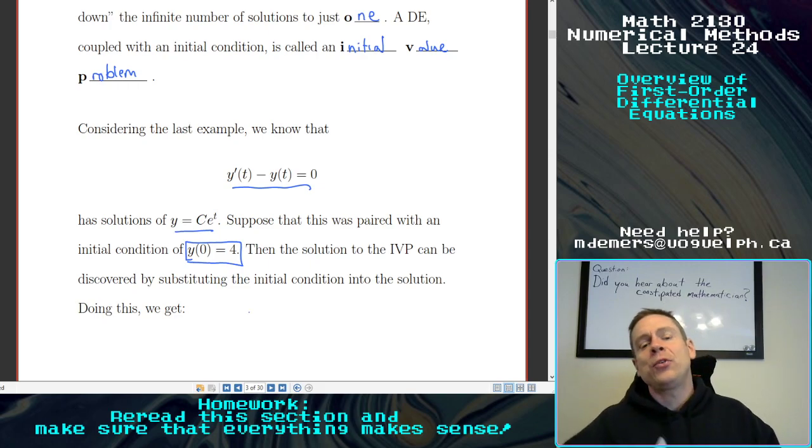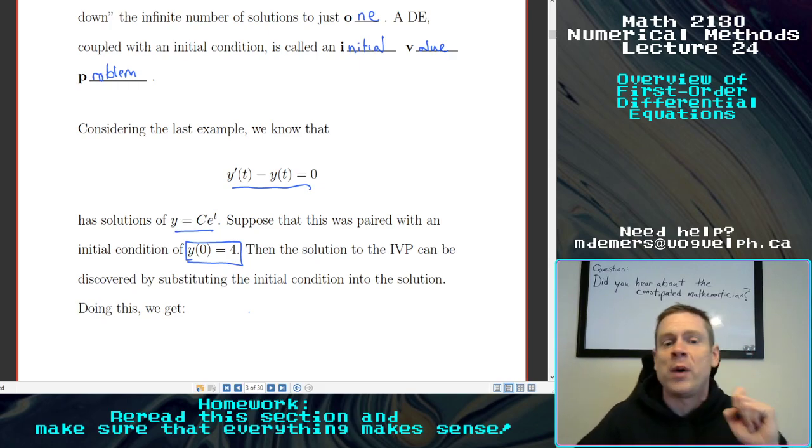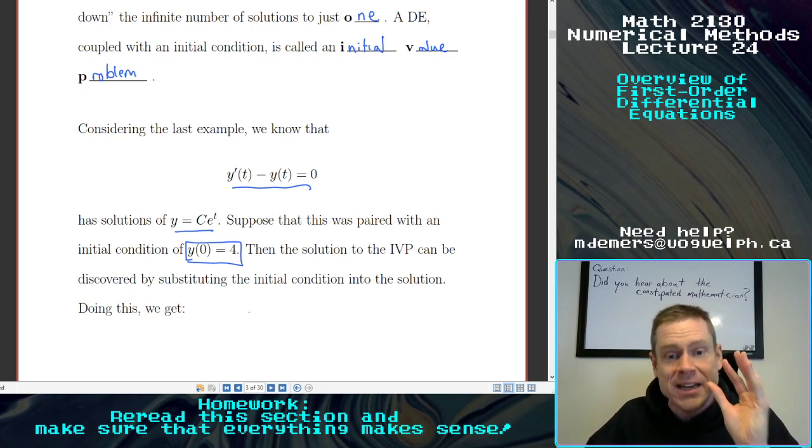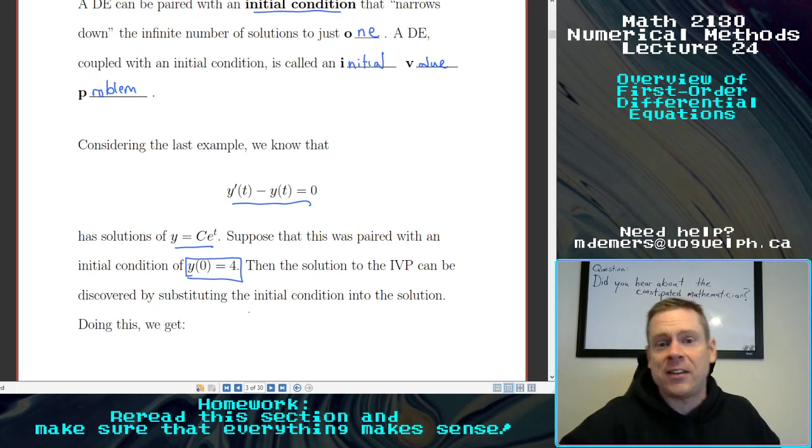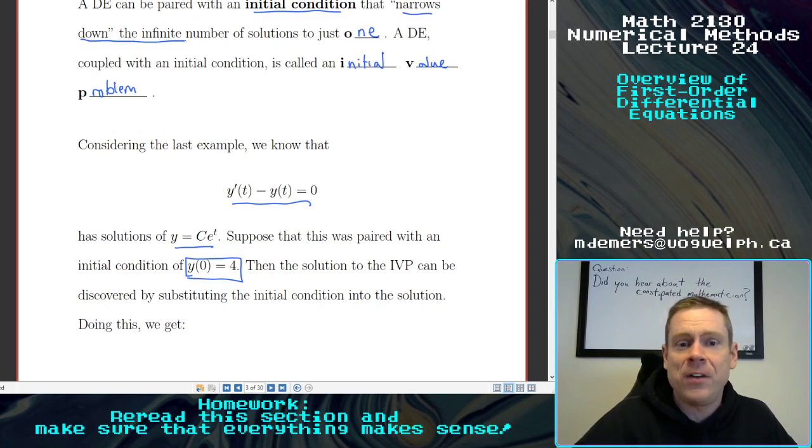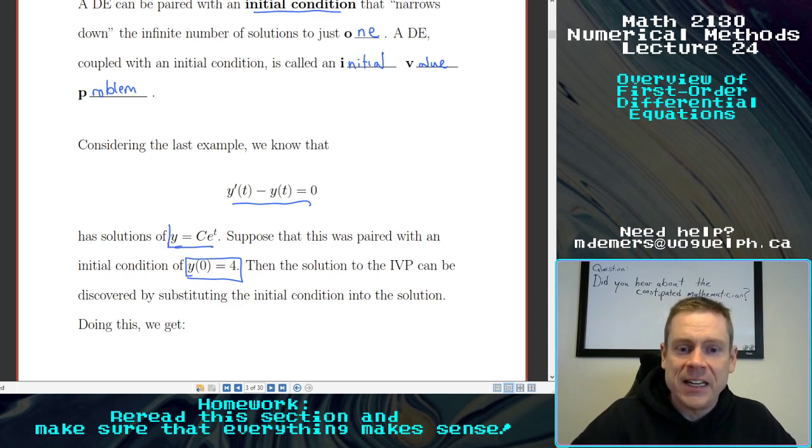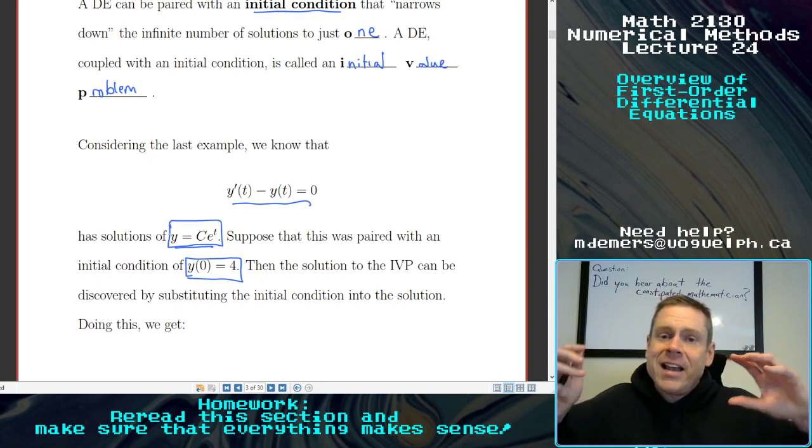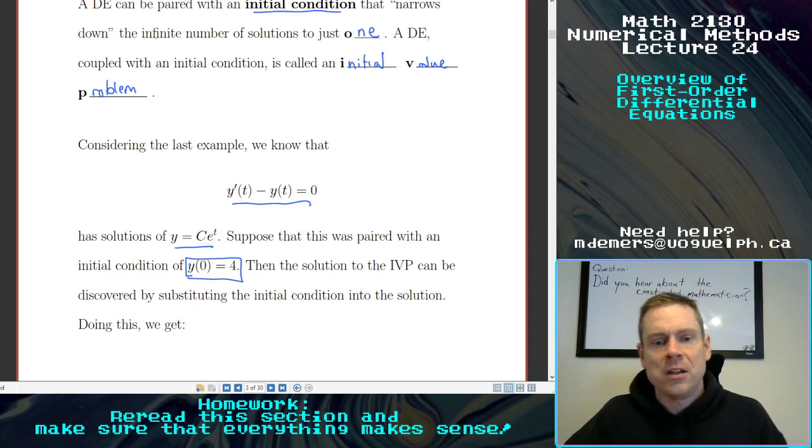Suppose this was paired with an extra condition that says y of 0 equals 4. Okay. So suppose I have a differential equation, that is what I said, but I also have an initial condition of y of 0 equals 4. Well, I can figure out exactly what solution I need from that by substituting it into our solution, right? What the effect of this is, as I said, was that it narrows down the infinite number of solutions to just one. So while we have y equals c e to the t, this is an infinite number of solutions, one for every single value of c, I can narrow that down to a single solution by applying the initial condition. So check this out.